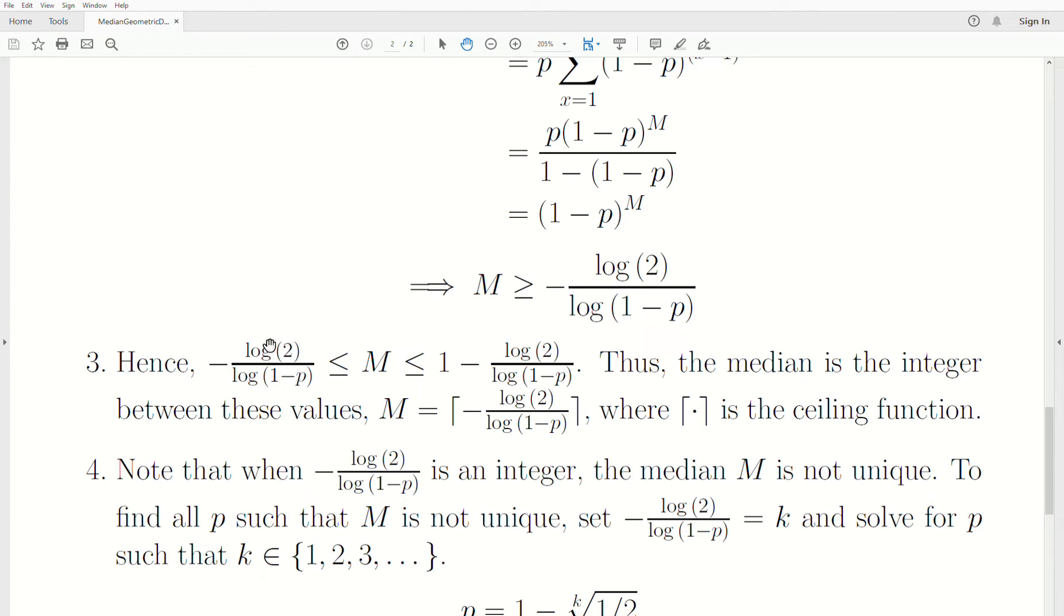But notice that if this value is an integer, then one more than that is also an integer, so M could be either of those values. So if that quantity is an integer, the median is not unique.